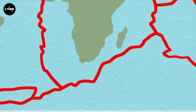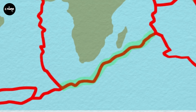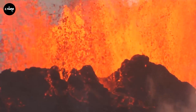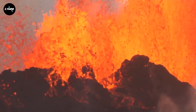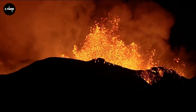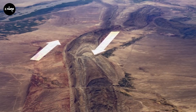Earthquakes are also caused by volcanic activities, which account for about 7% of earthquakes. The explosive eruption of a volcano sends magma flowing from the ground, spilling onto the surface with very strong forces, causing the ground to tremble greatly.